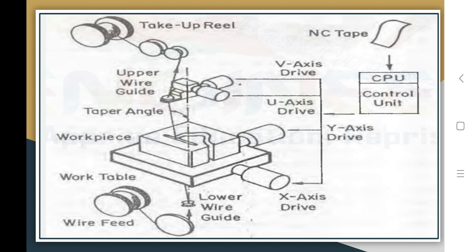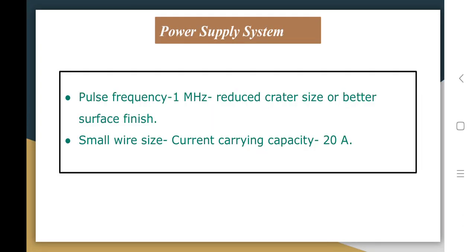The pulse DC power supply is used. The key difference between EDM and Wire EDM is that here we use a very small diameter wire as the electrode. We cannot produce a very large crater, so we need a very small size crater. To achieve this, we use a high frequency current in the range of one megahertz. Because of this high frequency, the crater size reduces and accuracy and surface finish improve.